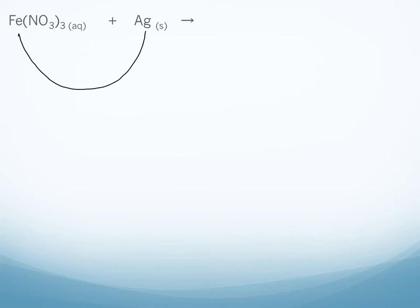In this next example, we want to see if silver can replace iron in a single replacement reaction. Silver is pretty low on the activity series — it can only replace a few metals that are below it, but iron is not one of them. So this is not a reaction.